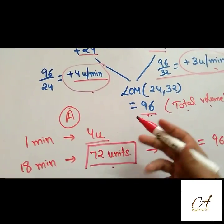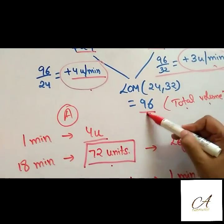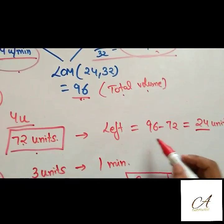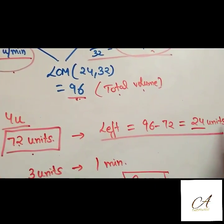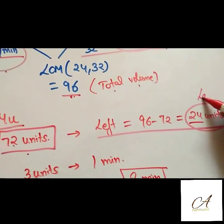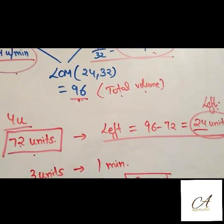That is left out units of the reservoir, which is 96 minus 72, that is 24 units is the left part of the reservoir.